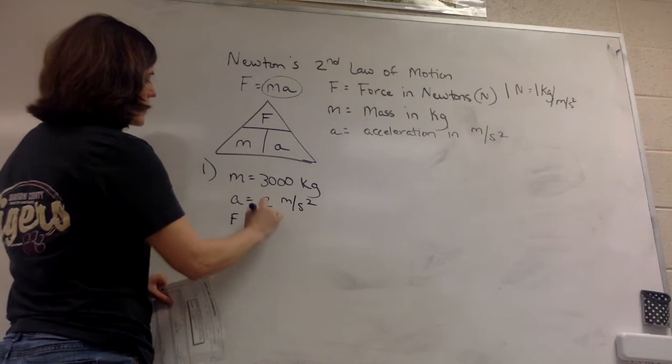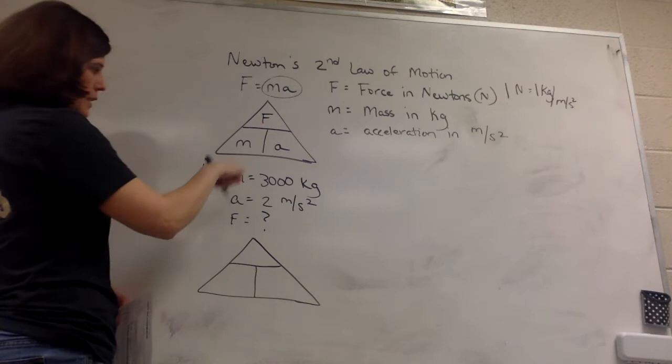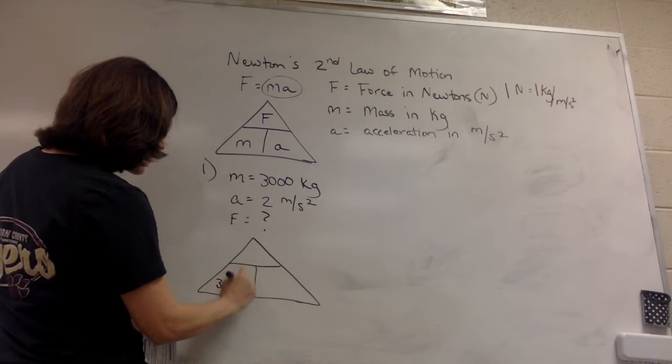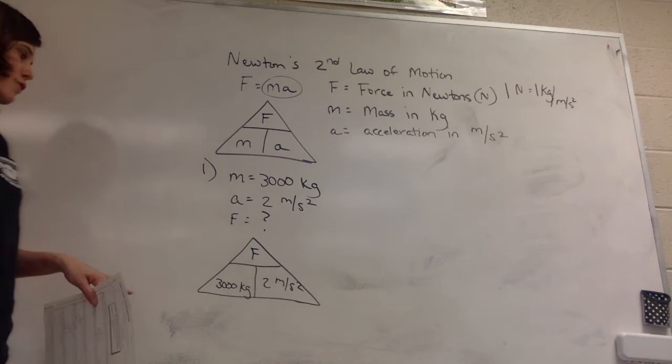Just like with all the other problems, either plug into the equation and solve, or I'm going to use the triangle method. So we have the mass, so instead of the m I'm going to substitute in 3,000 kilograms. Instead of the a I'm going to substitute in 2 meters per second squared, and again force is what we're trying to solve for.